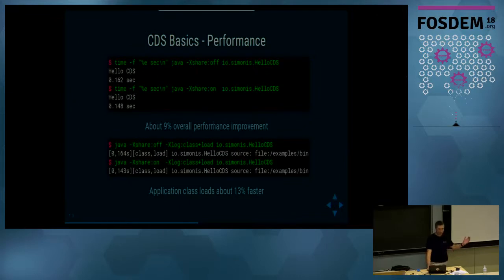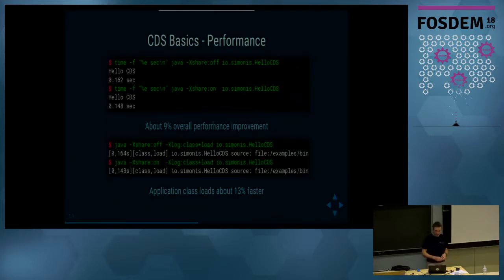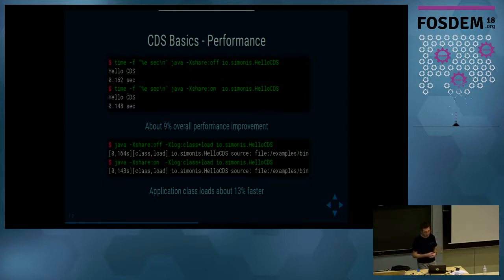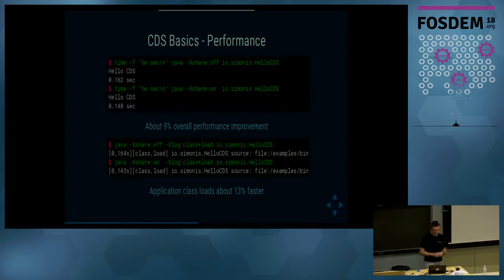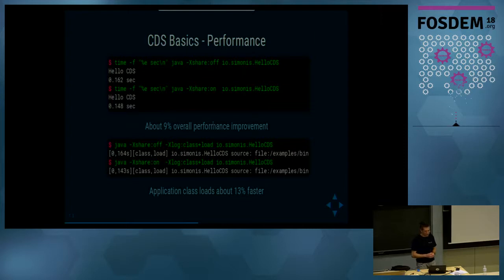For performance: using time (not a serious benchmark), when running with the shared archive turned on we get about 9% overall performance improvement for the whole application. If we measure the time until our application class gets loaded — typically the last class for a Hello World program — it's about 13% faster. I'll show numbers for Tomcat later, but unfortunately I couldn't reproduce the 20-30% that others mentioned; in my measurements it was not more than 10-13% improvement.